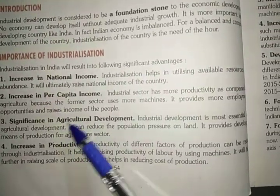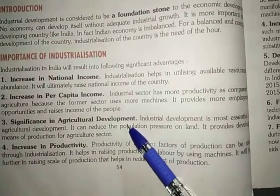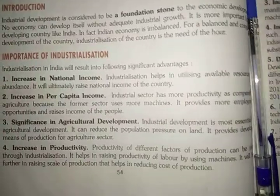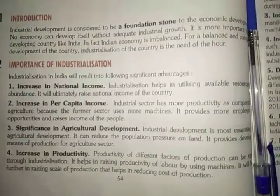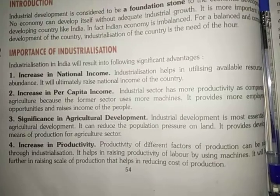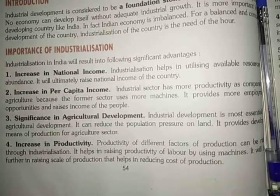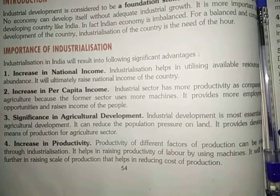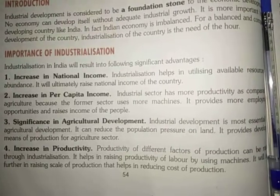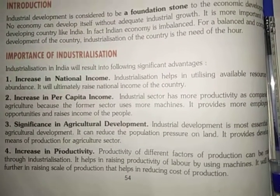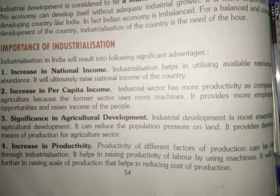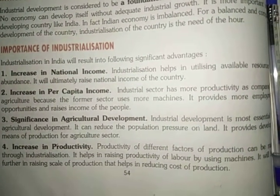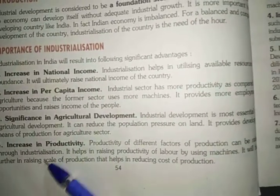Next is significance in agriculture development. Agriculture will produce means of production, that is the raw material, and that raw material would be purchased by the industry which will create finished goods from it. So the agriculture sector's product is used in industries — that is how industrialization also supports the significant development of the agriculture sector.